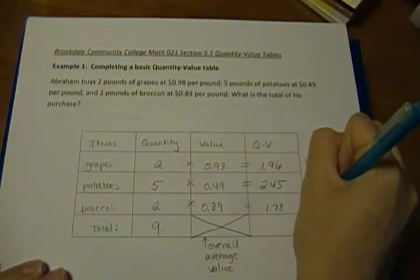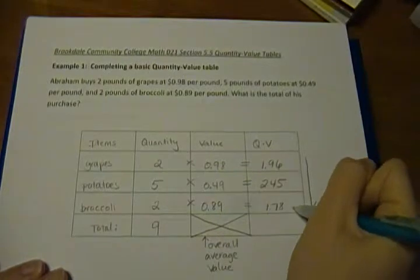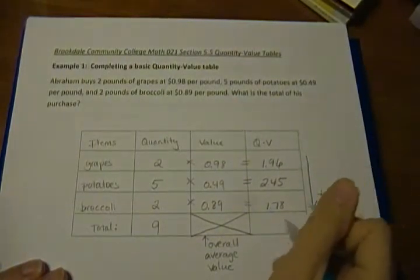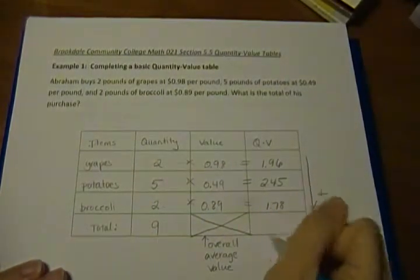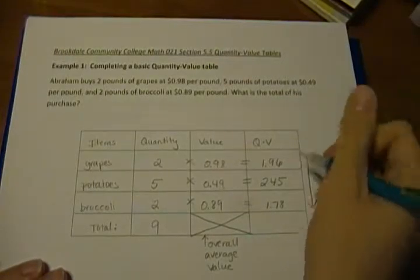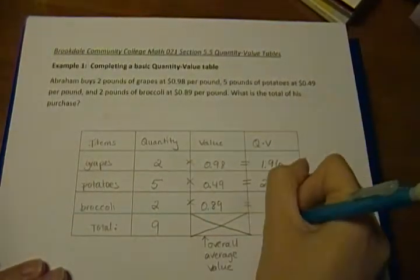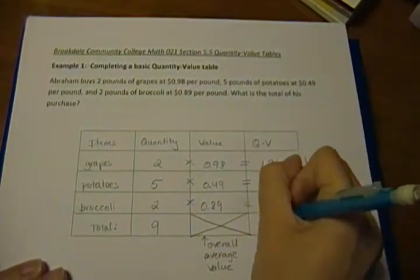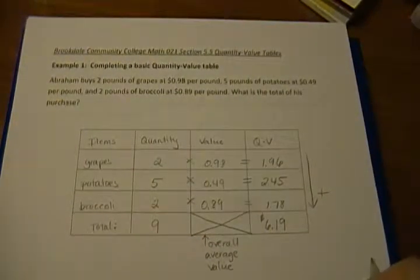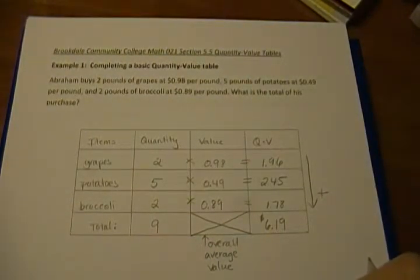Now just like any other receipt, you add up each of these to get our final cost. So when we add these up, we get six dollars and nineteen cents as our total purchase price.